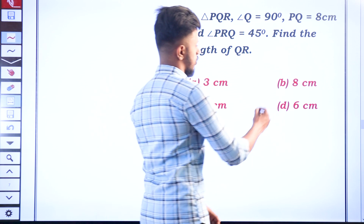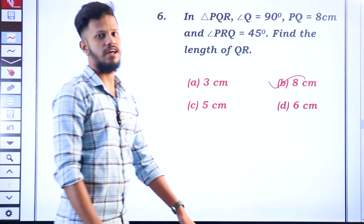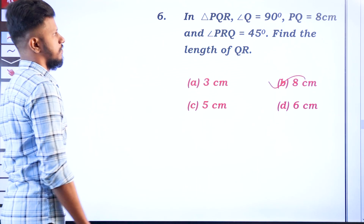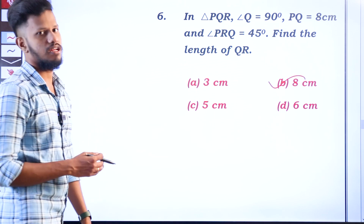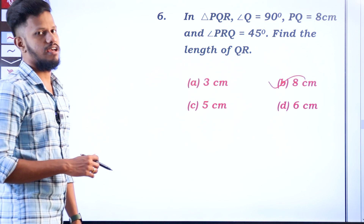What do you want to answer here? Option B. How do you say that? Okay, first, let's take the length of the triangle — right angle triangle.